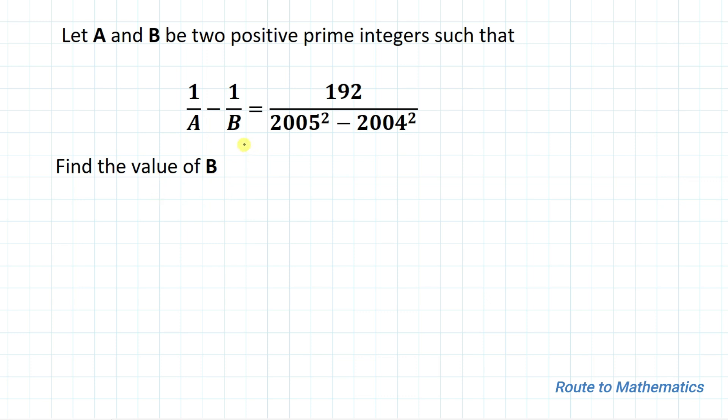Here we have given A and B are positive prime integers that satisfy this equation, and we are asked to find the value of B. Without any delay, let's start the solution.